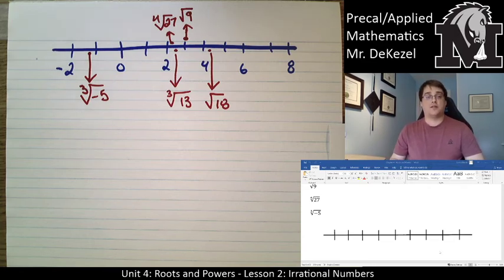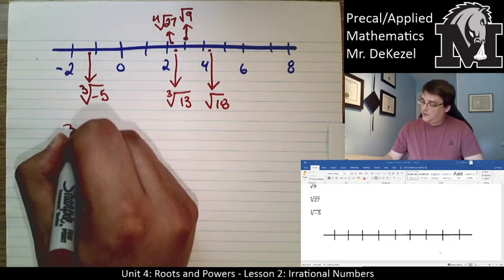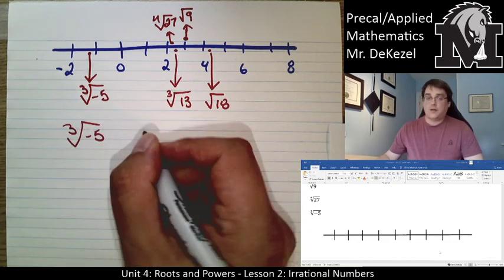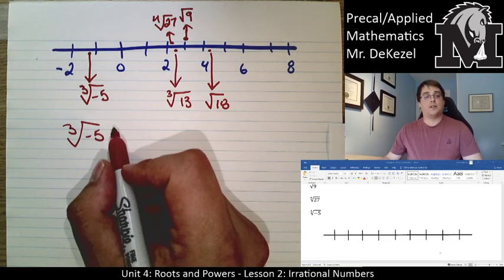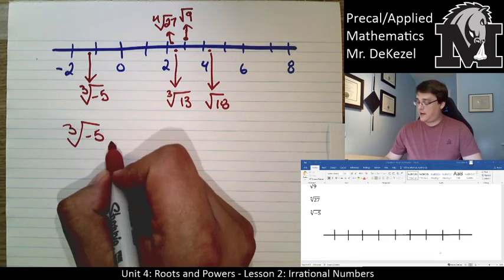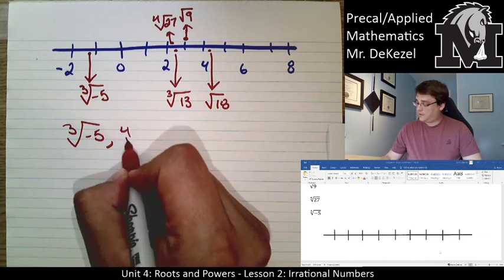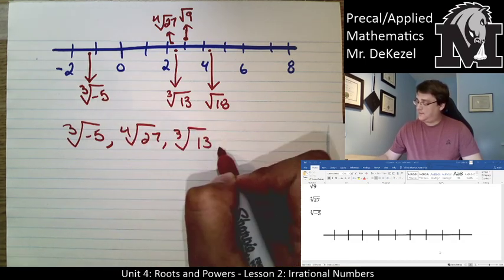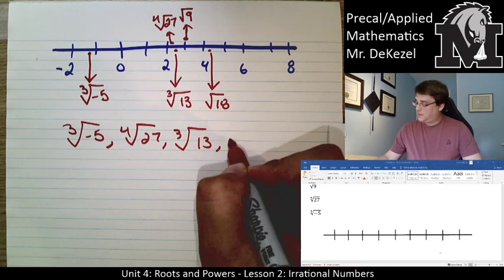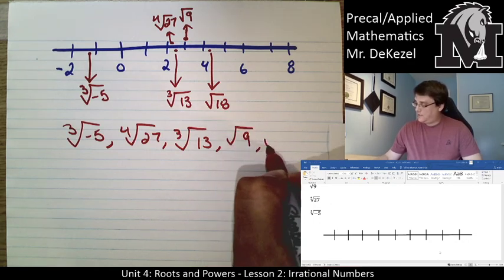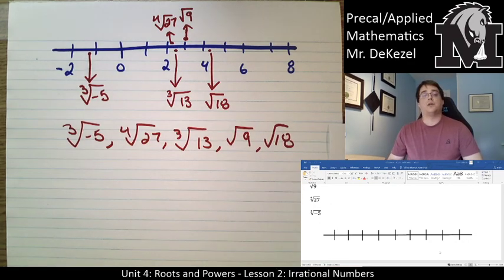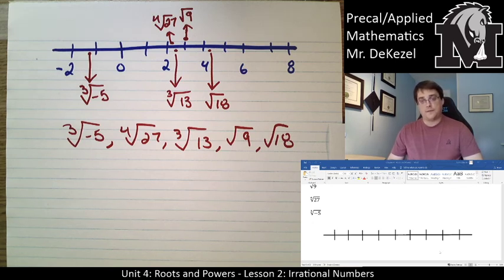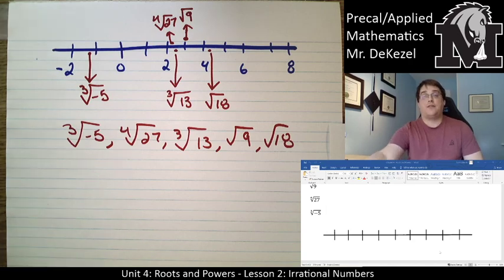From the number line, listing from smallest to largest: the cube root of negative 5, then the fourth root of 27, the cube root of 13, the square root of 9, and the square root of 18. We can easily see the order from the number line. That's the lesson for today — check out the practice problems and let me know if you have any questions.